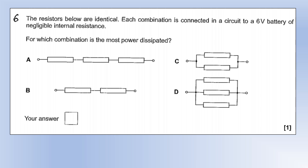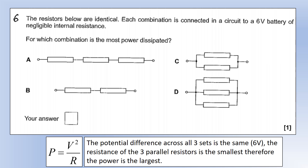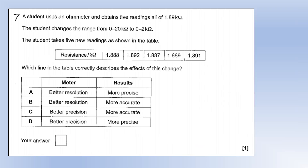Question 6: identical resistors connected in different combinations to a 6-volt battery — which combination dissipates most power? Using P = V²/R, to maximise power we want minimum resistance. Three resistors in parallel give resistance R/3, the smallest possible, so that combination dissipates maximum power — option T.